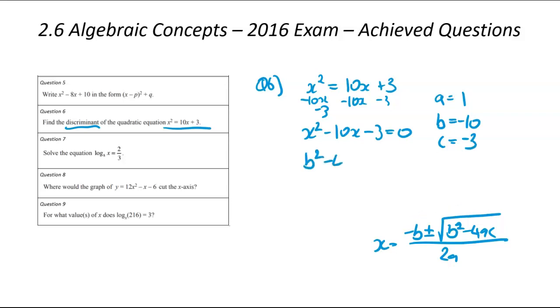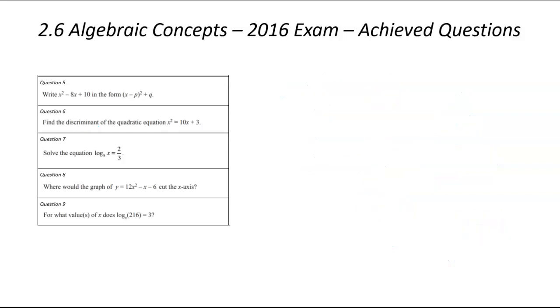So discriminant b squared minus 4ac, that's going to be equal to negative 10 squared minus 4 times 1 times negative 3. That there becomes 100 plus 12, that there is 112. So our discriminant is 112. It's positive. That means there'll be two answers to that solution.